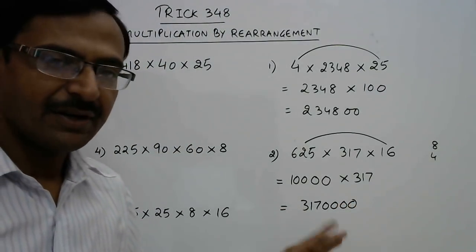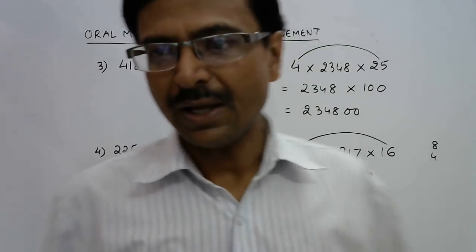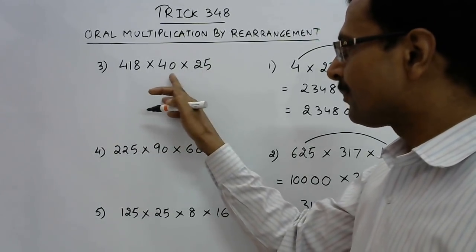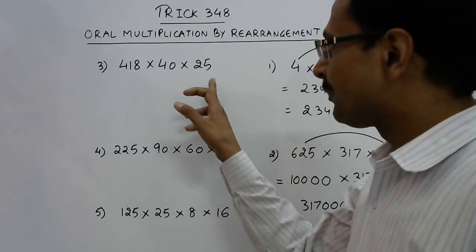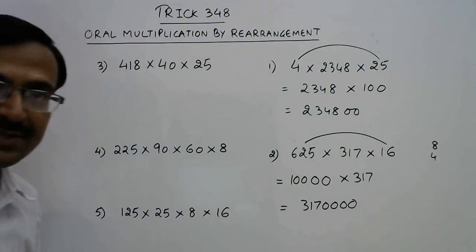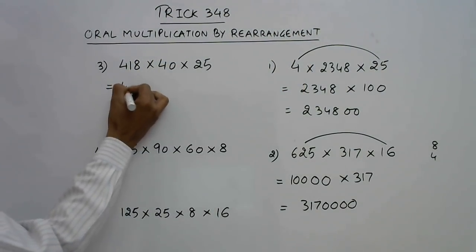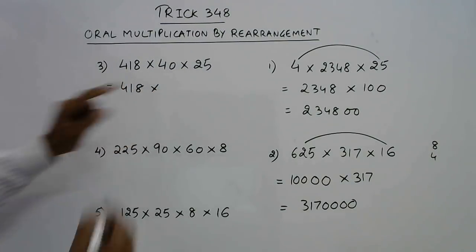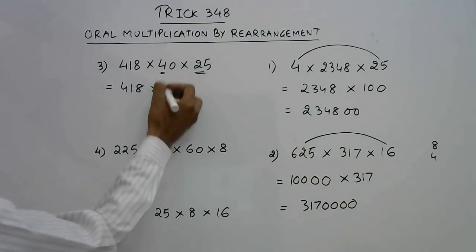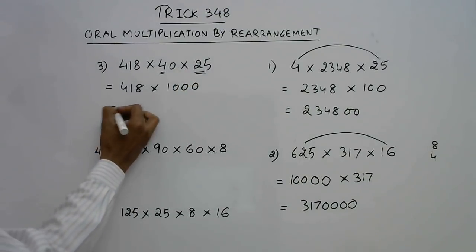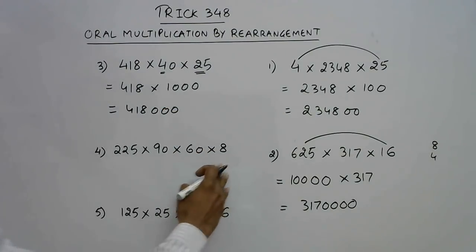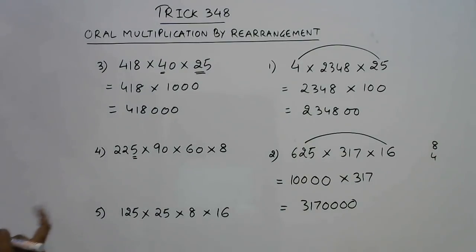Since 10,000 contains 4 zeros, the third number 317 will have 4 zeros succeeding it, giving the answer 3,170,000. Similarly in the next question with three numbers, we can multiply 25 into 4, which gives 100, and with one more zero it becomes 1000. So 418 will be followed by three zeros to give the final product of 418,000.